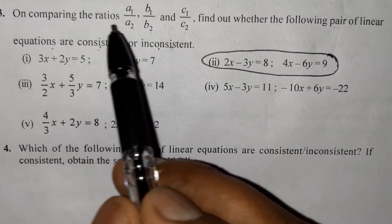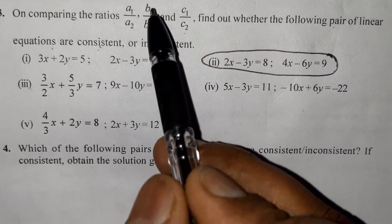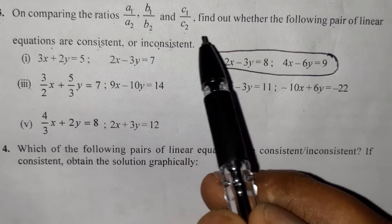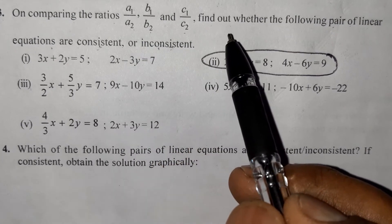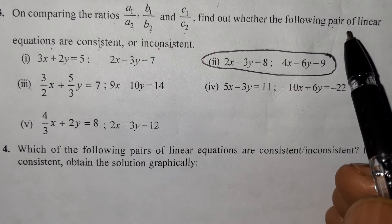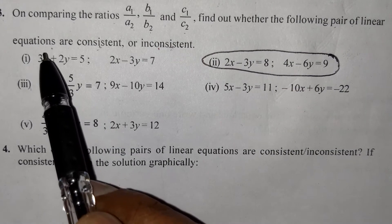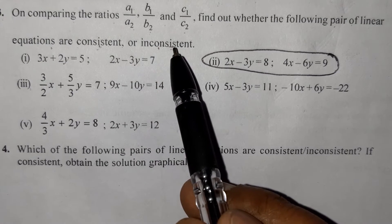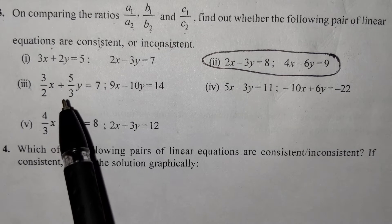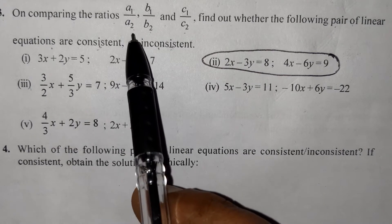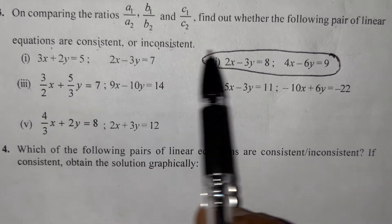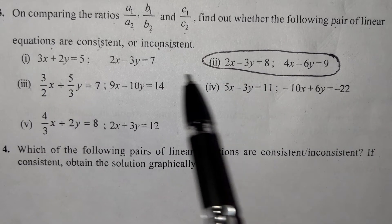On comparing the ratios A1 by A2, B1 by B2, and C1 by C2, find out whether the following pair of linear equations are consistent or inconsistent. By comparing A1/A2, B1/B2, C1/C2, we determine the nature of the 5 pairs given.